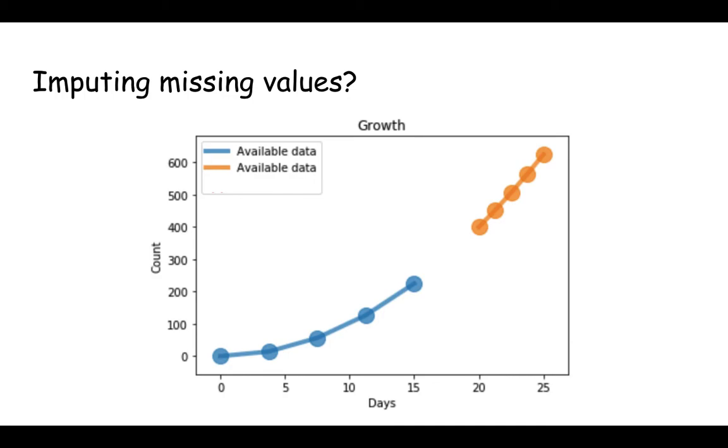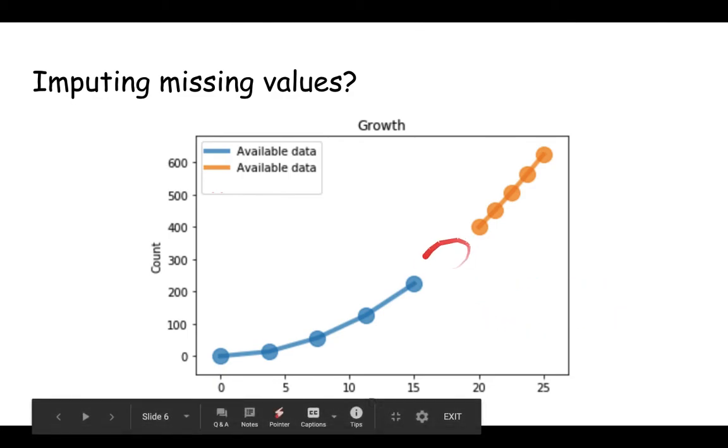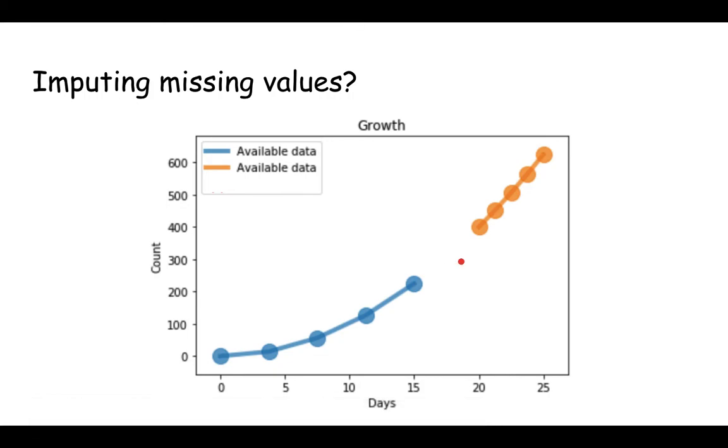So if we have this missing data in here, which we can artificially create based on previous historical data or just fitting a curve to this particular line, these two missing data points could be generated.